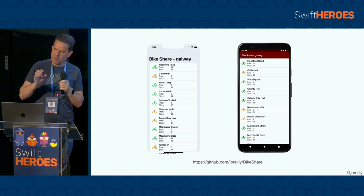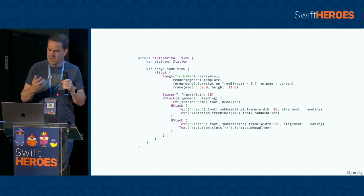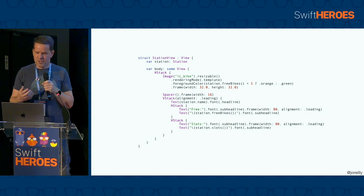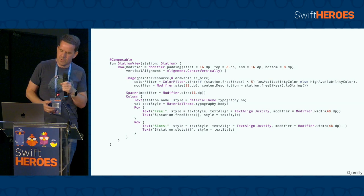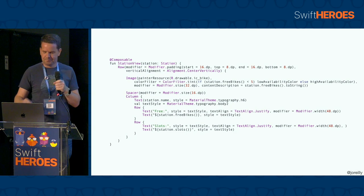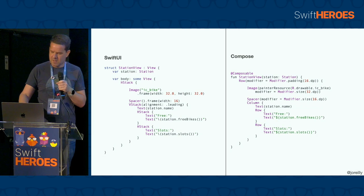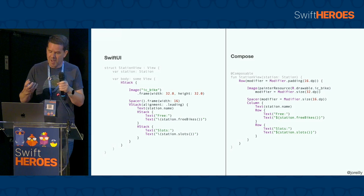Before showing the SwiftUI and Compose code for the rows themselves — we have a row with a tinted image representing how many bikes are available, and then a column containing the name of the station and availability info. The SwiftUI code shows the general structure with an image for the tinted icon colored based on the number of free bikes, and hstack text elements. The Compose equivalent has the same structure. In the pared-down side-by-side version we can see how the UI elements map very closely — hstack to row, vstack to column, with image, spacer, and text elements in both. Some API differences and differences in how styles and padding are applied, but fundamentally the same.